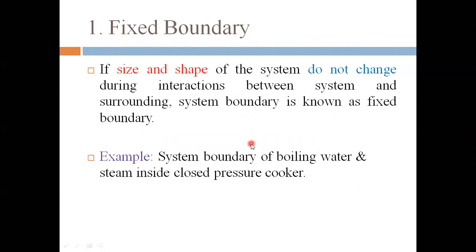A fixed boundary, as the name suggests, is fixed. If the size and shape of the system do not change during the interaction between the system and surrounding, that boundary is known as a fixed boundary. For example, a pressure cooker — the pressure cooker boundary is fixed because the pressure cooker has no shape or size change. So this is the fixed boundary of boiling water and steam inside a closed pressure cooker.